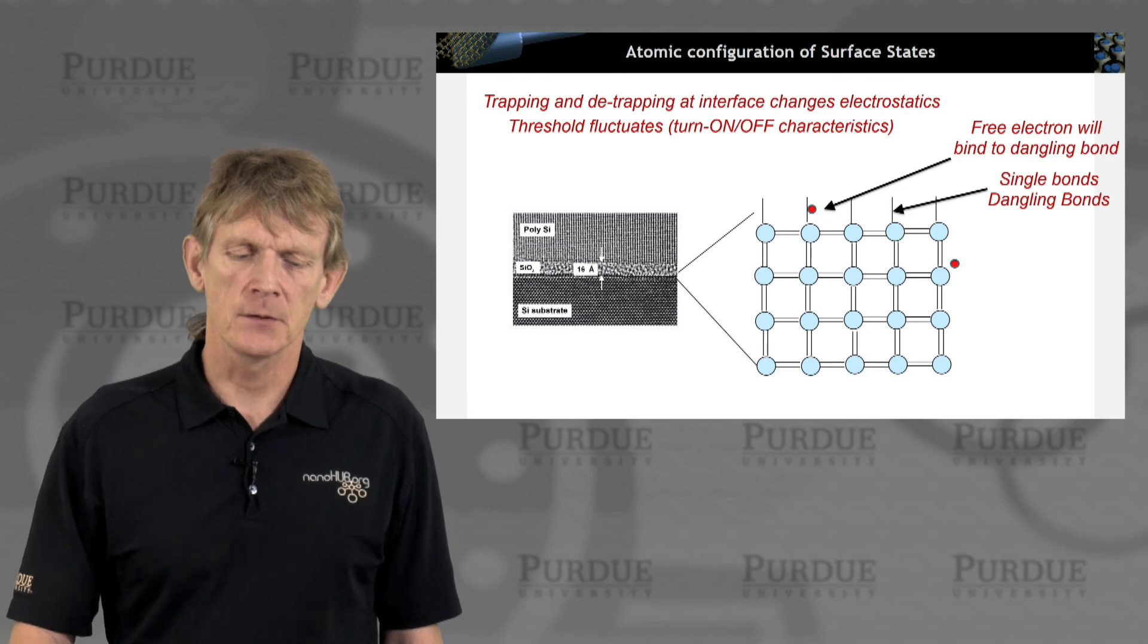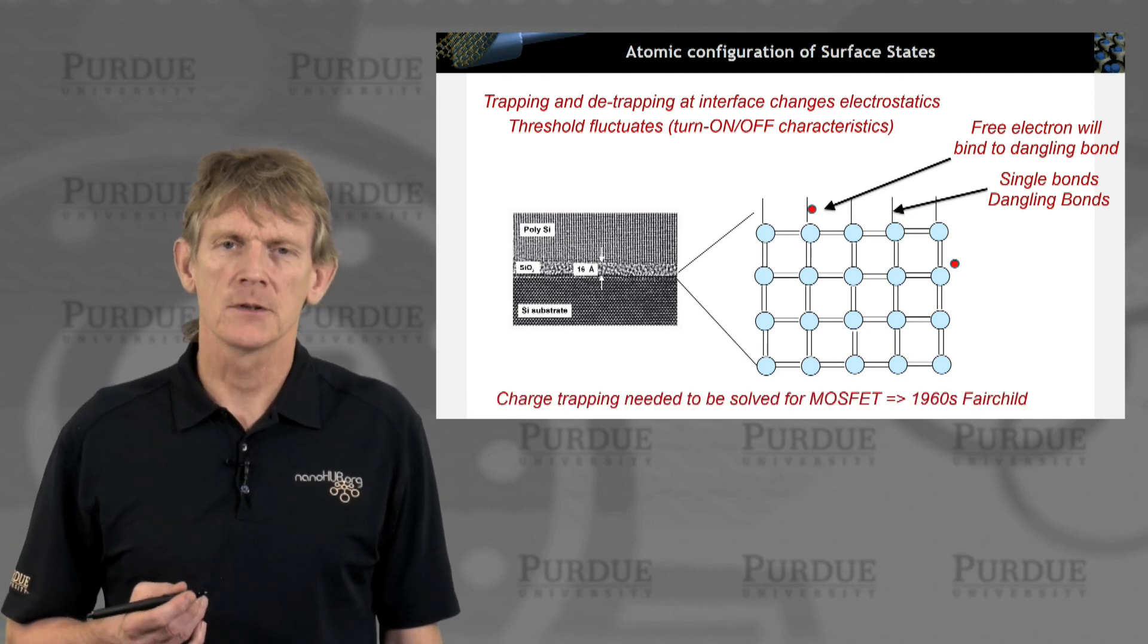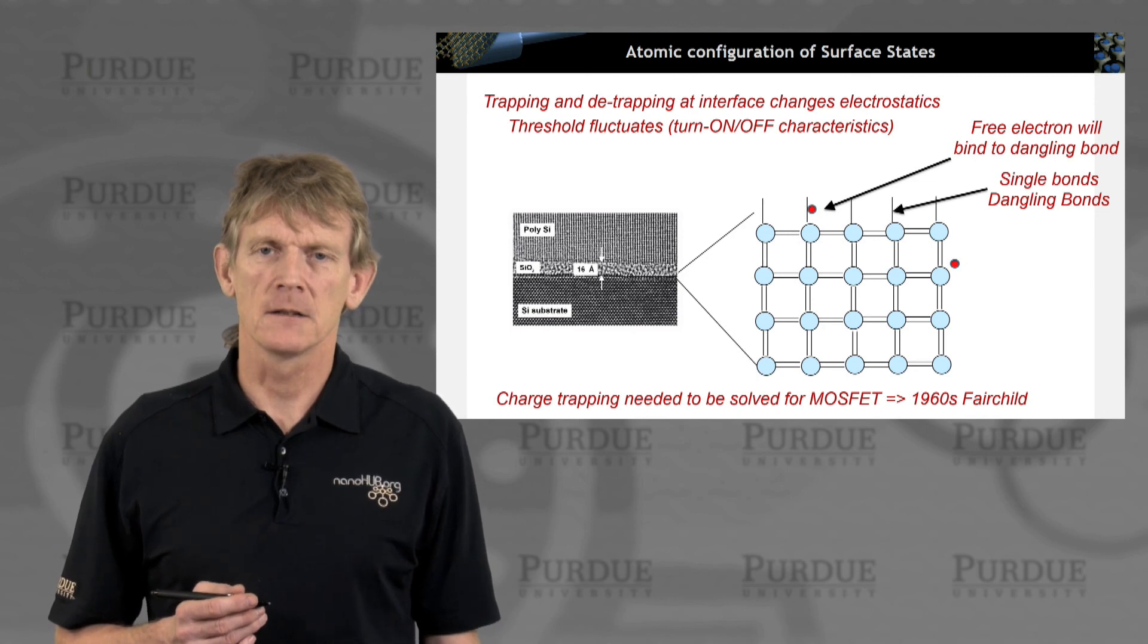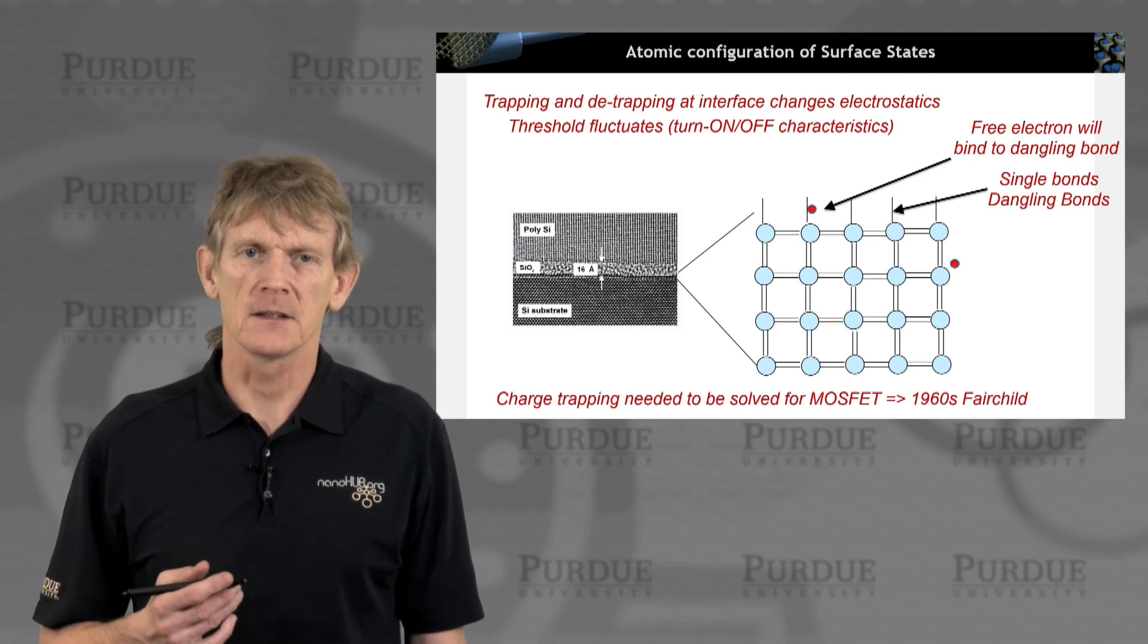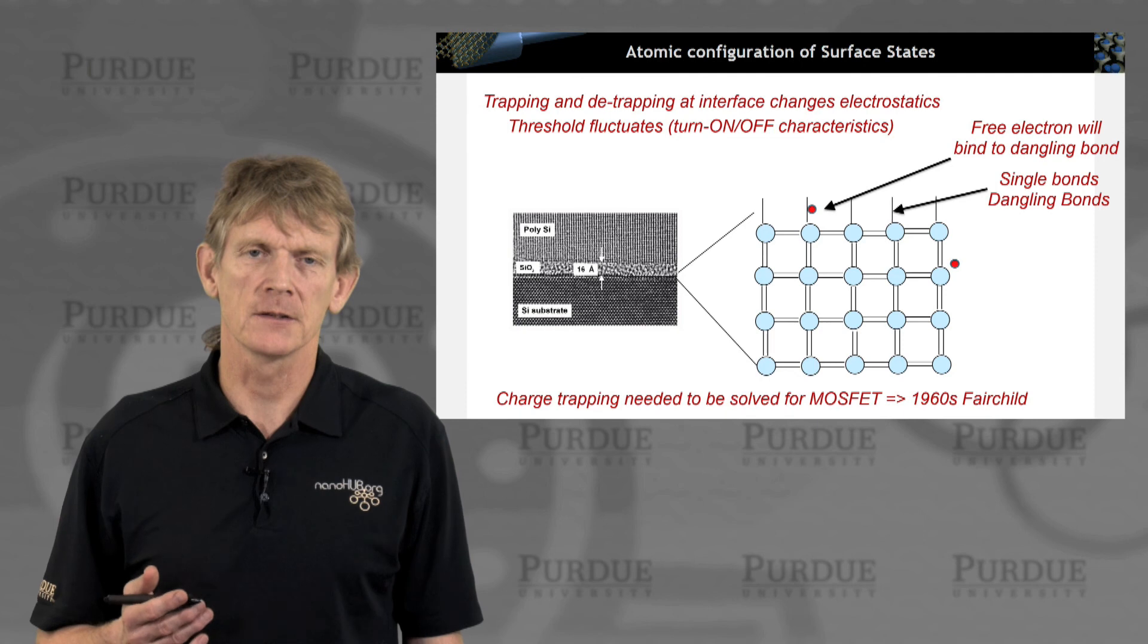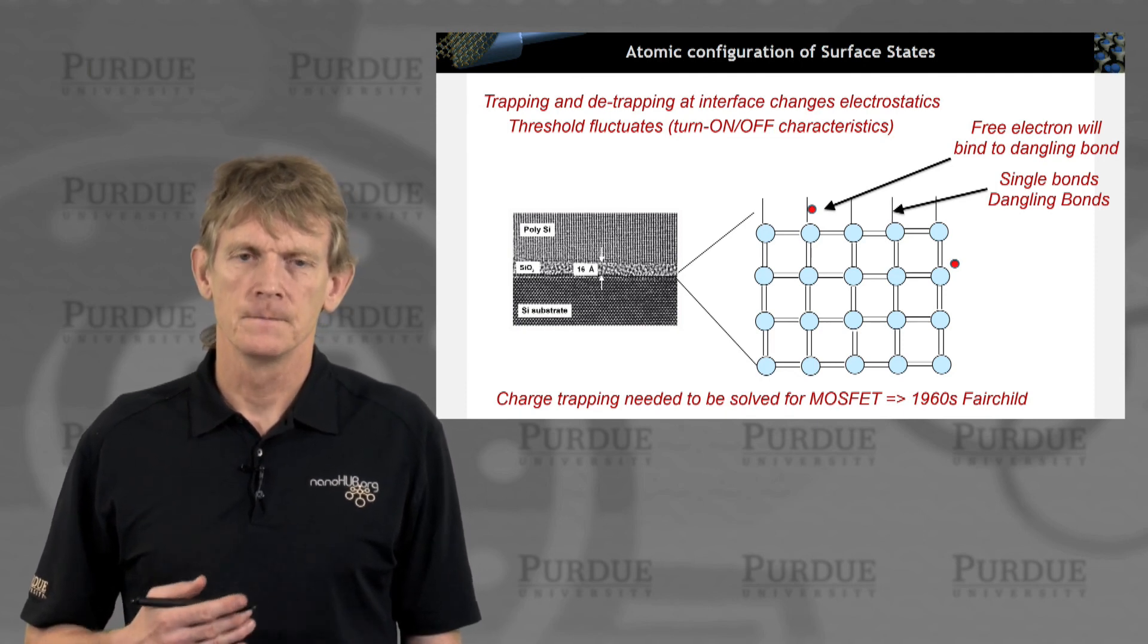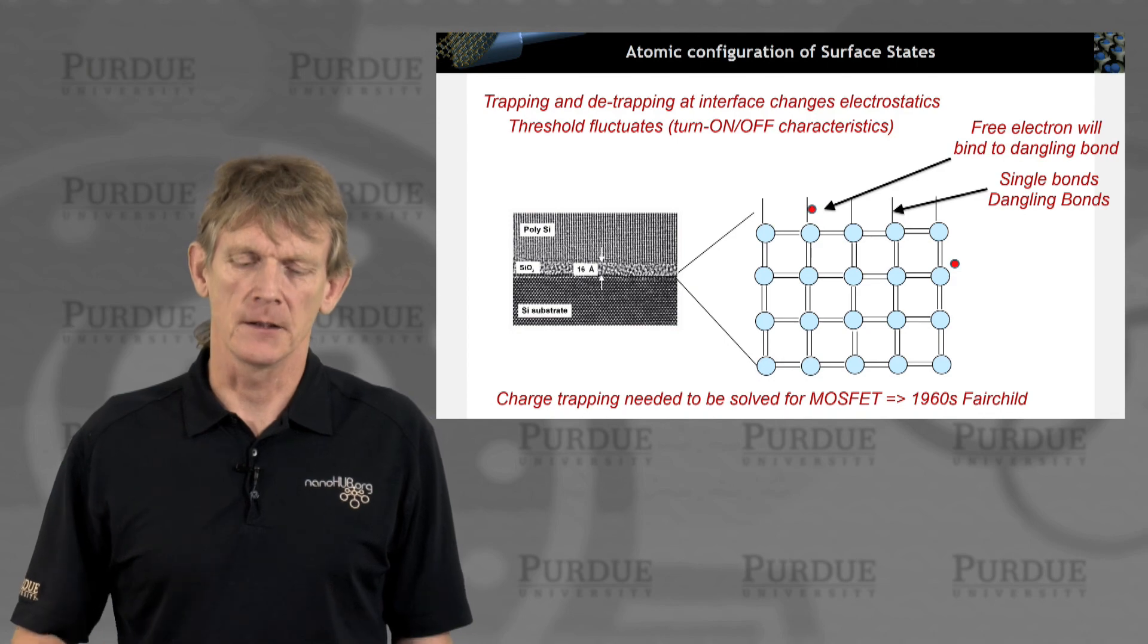That needs to be overcome by some shape or form. And that is what the major innovation was in the 1960s, that Fairchild enabled a planar process to passivate these kind of bonds.